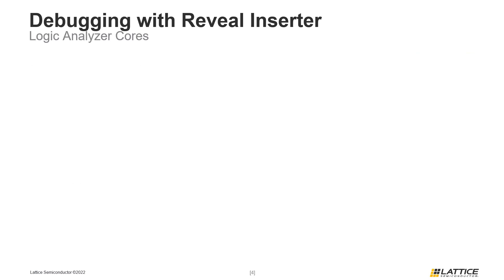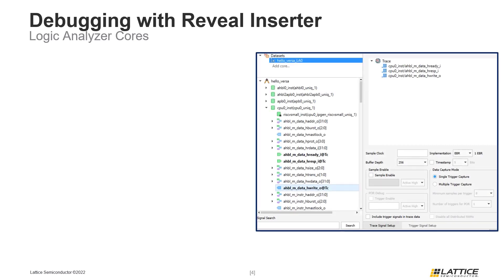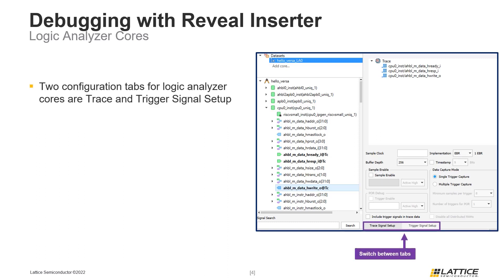We are now going to review the different types of Reveal debug cores in more depth. Once a core has been added, the right side of the Reveal Inserter window will be updated. Logic Analyzer cores have two configuration tabs: the Trace Signal Setup tab, used to select signals observed by the logic analyzer core, and the Trigger Signal Setup tab, used to configure the conditions for signal analysis.